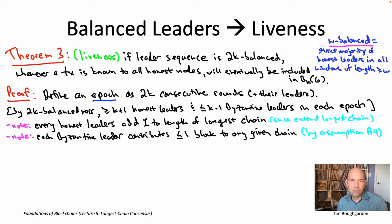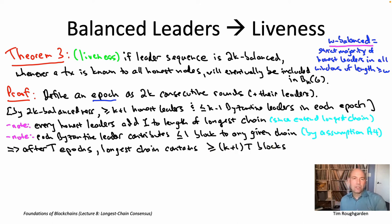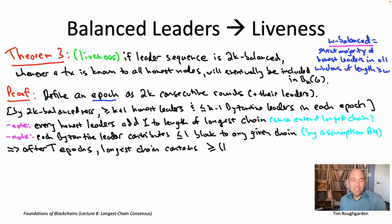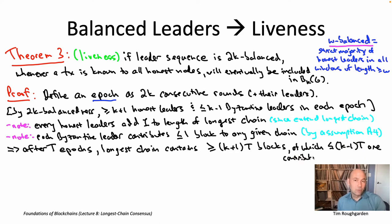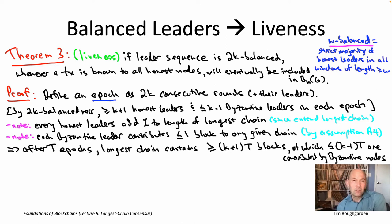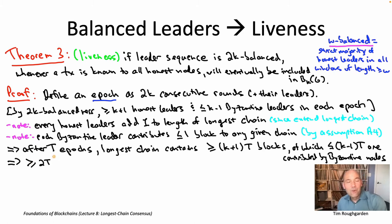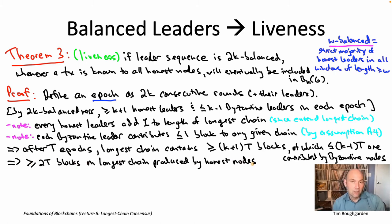Now let's think about fast-forwarding a whole bunch of epics — say capital T epics, a sequence of 2K times T leaders in all. Each epic has at least K+1 honest leaders, so T epics have at least (K+1)·T honest leaders. That means after T epics, the longest chain must have length at least (K+1)·T. Of the blocks on this longest chain, at most (K−1)·T could have been contributed by Byzantine nodes, since each epic has at most K−1 Byzantine leaders and each can contribute at most one block. So the difference must be made up with blocks contributed by honest leaders.